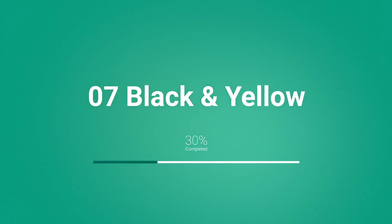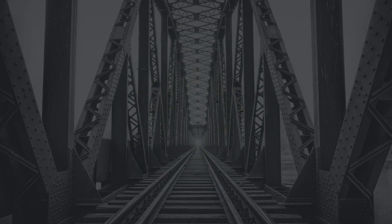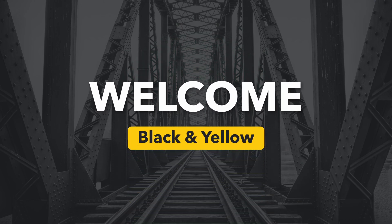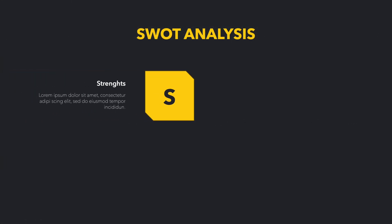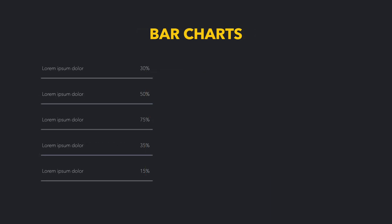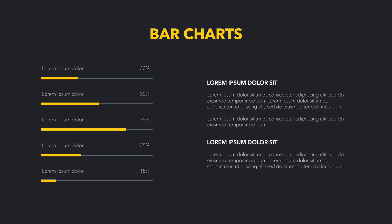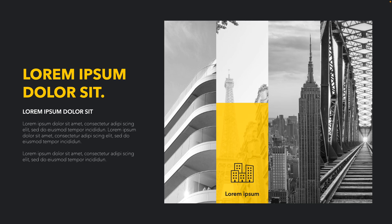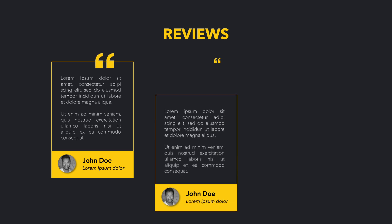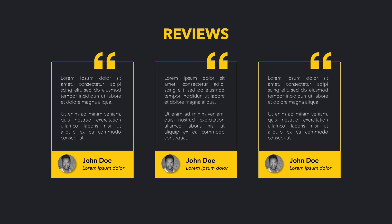Number seven is the black and yellow themed template — a minimal style presentation with black and white images and a yellow accent color. It includes an opening slide plus a variety of slides like SWOT analysis with animated parts, and bar charts with animated content on the right and animated bar charts on the left. You can show images, highlight parts, add extra information, and there's also a creative way to add quotes or customer reviews in a more unique way.